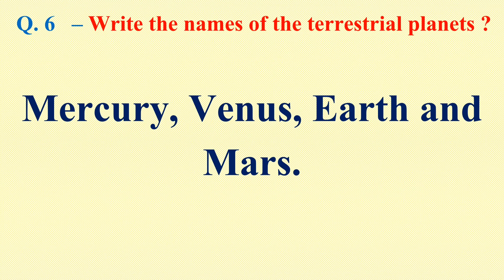Question number 6: Write the names of the terrestrial planets. The terrestrial planets are Mercury, Venus, Earth and Mars.